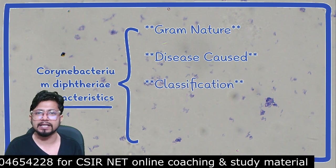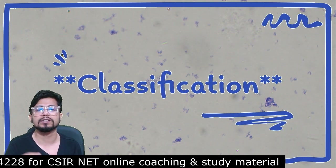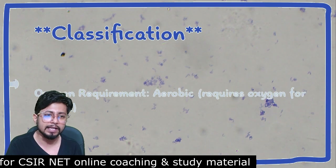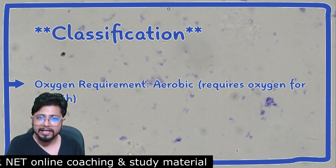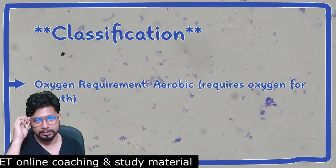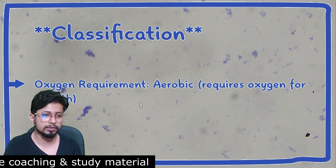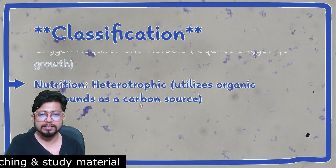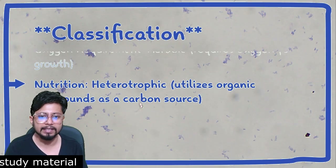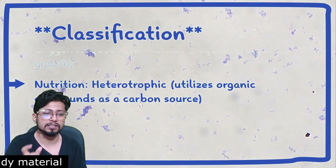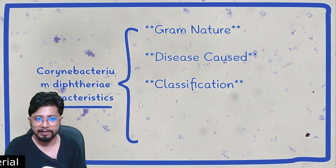The third important parameter is classification, done based on oxygen utilization. Based on oxygen requirement, Corynebacterium diphtheriae is aerobic in nature — it requires oxygen for its growth. Based on nutrient requirement, it is heterotrophic, meaning it utilizes organic compounds as a carbon source for living.